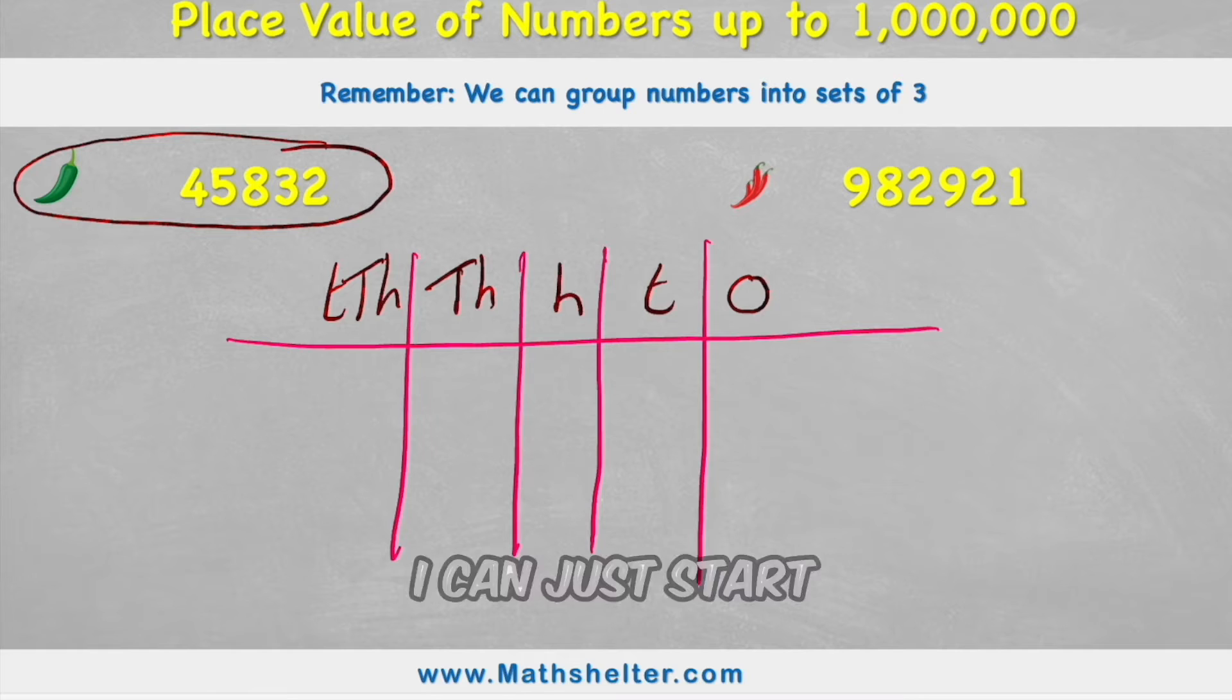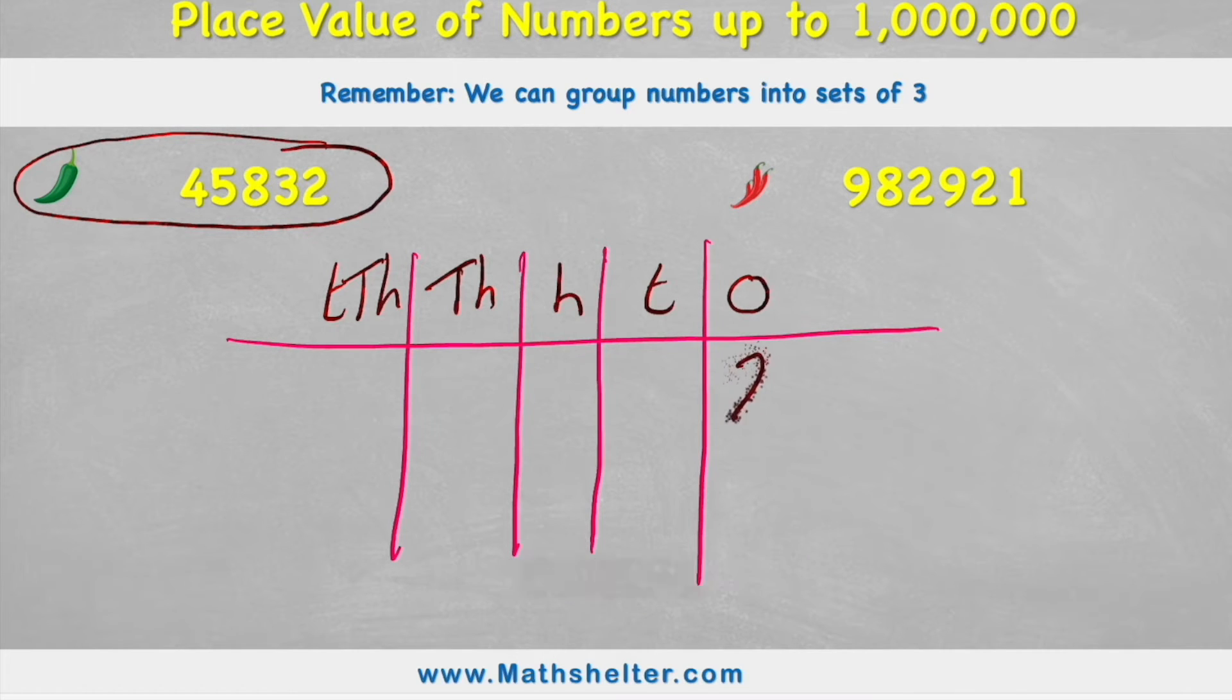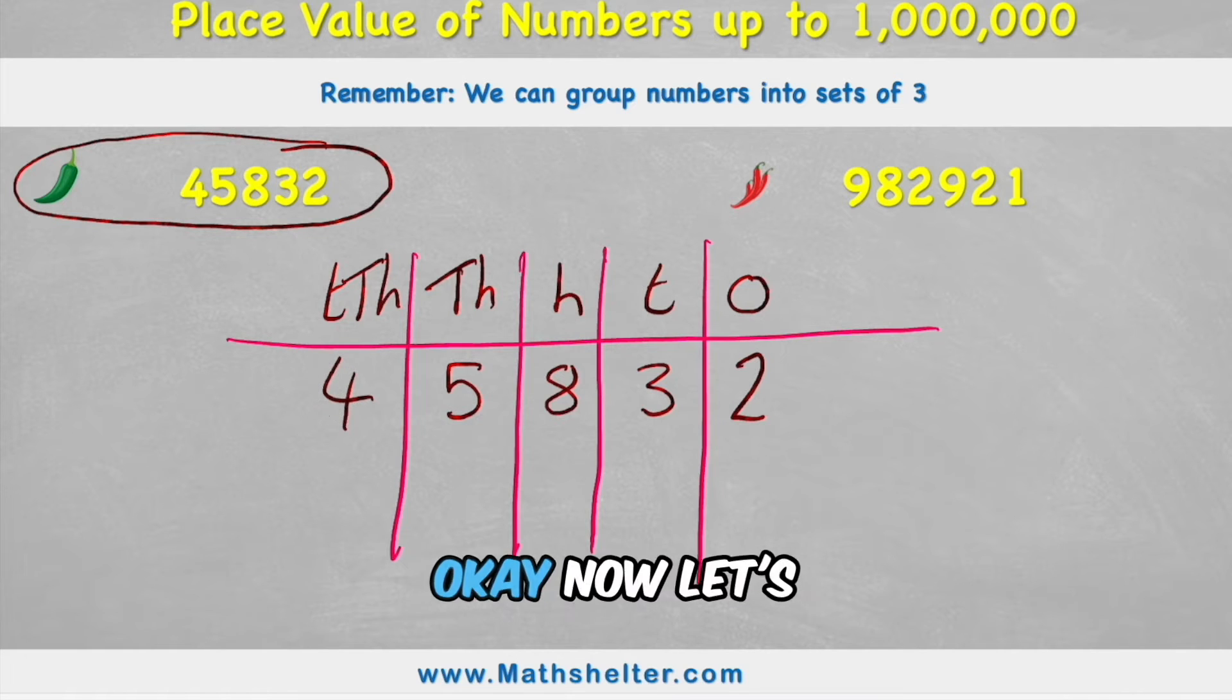Now I can start to put my numbers in place. So my 2 would go into my ones column, 3 would go into my tens, the 8 into my hundreds, 5 into my thousands, and the 4 into the 10,000.